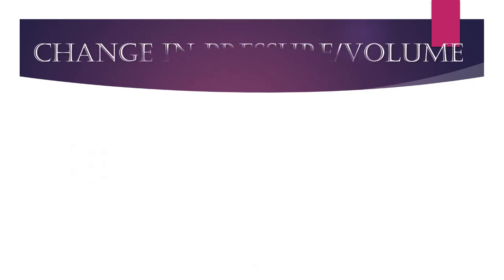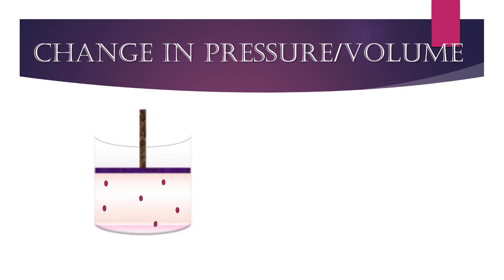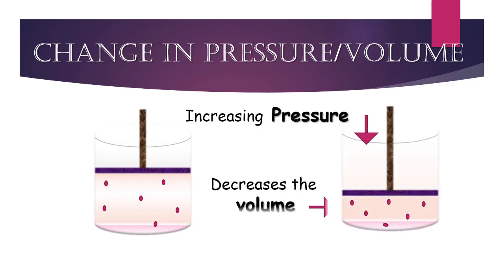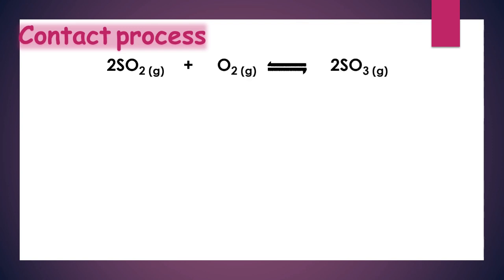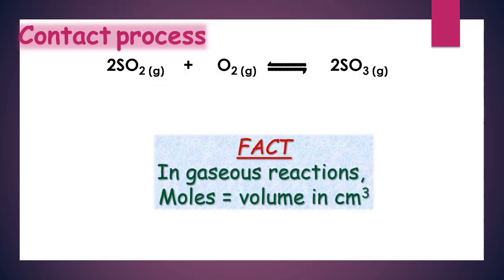Change in pressure mostly affects the equilibrium position of gaseous reactions, because gases are highly compressible compared to liquids and solids. According to Boyle's law, increase in pressure decreases the volume. So the effect of change in pressure and volume can be studied side by side. Let's consider an example of a reversible reaction taking place in the contact process for the formation of sulfur trioxide. In gaseous reactions, the number of moles in the balanced chemical equation can be taken as volume in cubic centimeters.